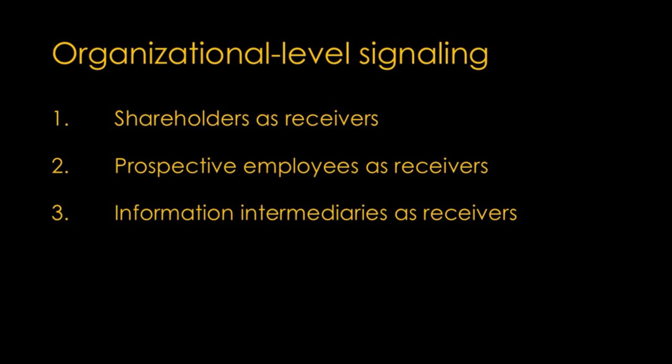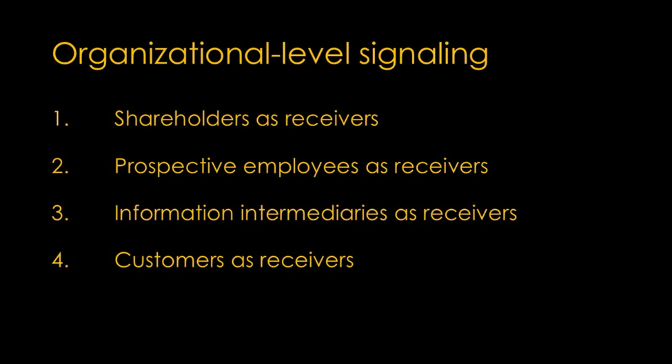Information intermediaries are third-party entities that collect, analyze, interpret, and disseminate information about organizations to other stakeholders. Those intermediaries serve as a bridge between organizations and their stakeholders to reduce information asymmetry in the market. Information intermediaries could be analysts, auditing firms, and media outlets. It's important to note that information intermediaries are not infallible — their interpretations can be biased or mistaken, and in some cases they may face conflicts of interest. The financial crisis of 2008, for example, highlighted issues with how credit rating agencies were operating.